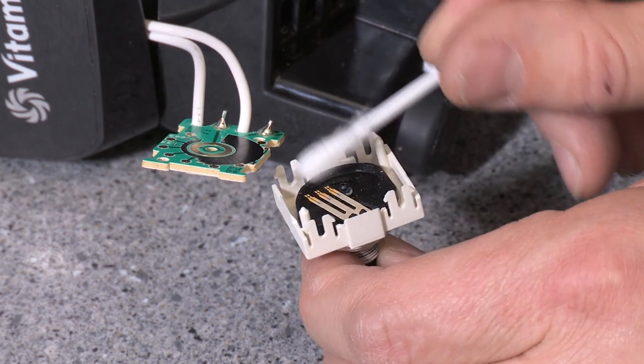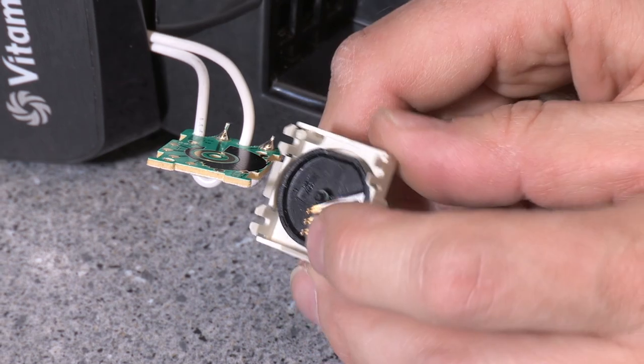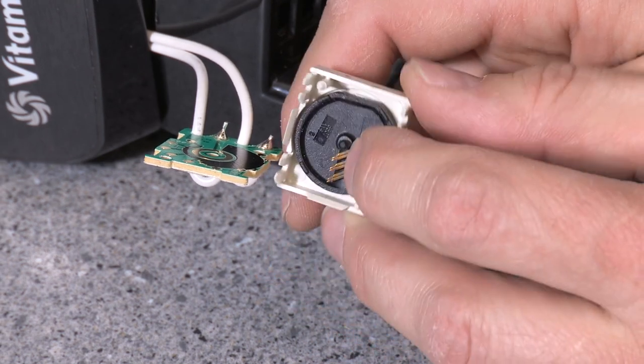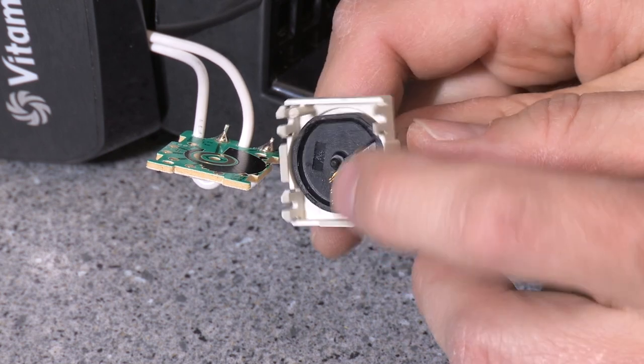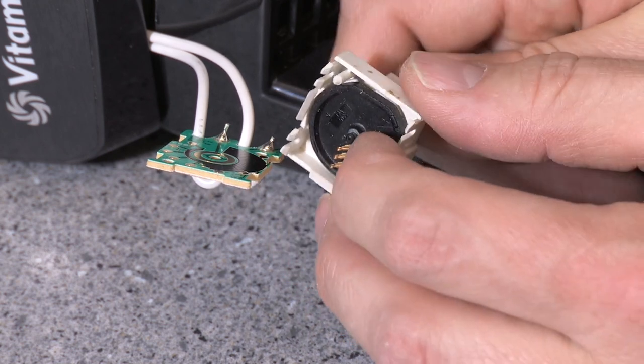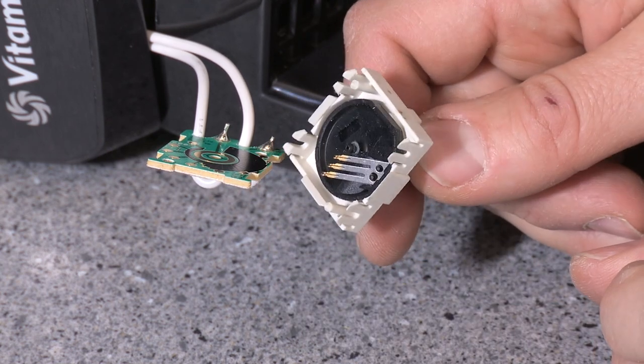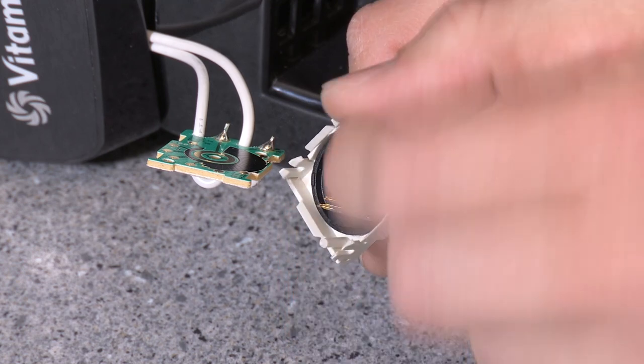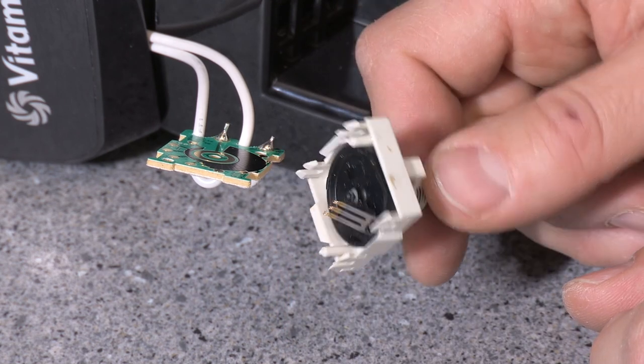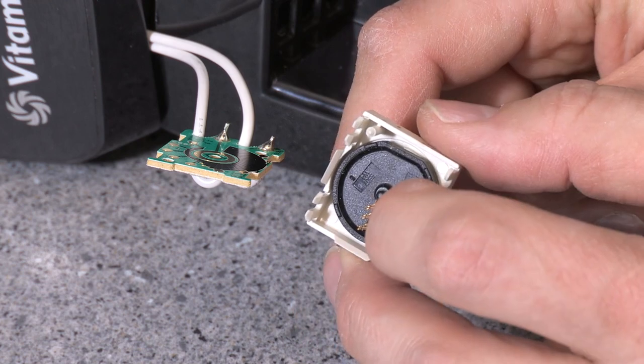You can also clean out the contacts. Another problem that might happen is that these metal fingers are bent, so they are not pressing hard enough against the carbon. Then you might try to bend them, so they are contacting the carbon again.